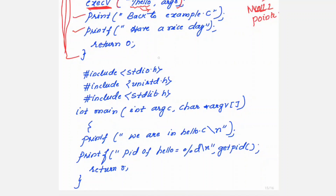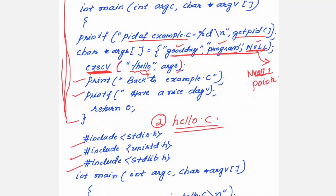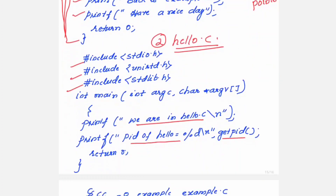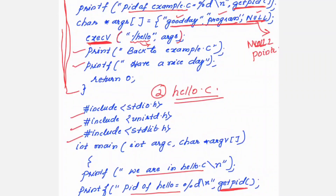The second file I am naming hello.c. In this file, after the header files and main, I am printing two statements: 'We are in hello.c' and 'PID of hello is', using getpid(). In example.c I also want to get the PID, and in hello.c also I want to get the PID. So one printf is to get the PID of that process, and now we have to see how EXECV works.